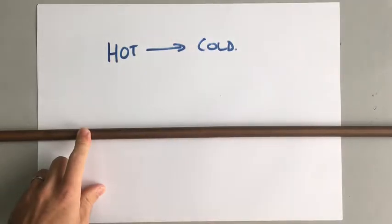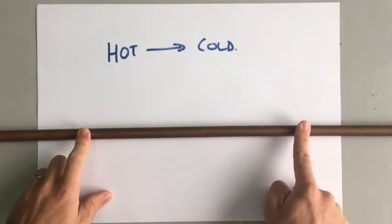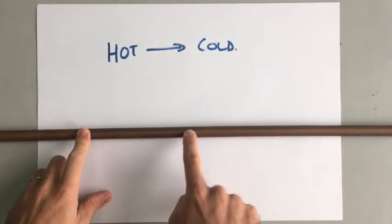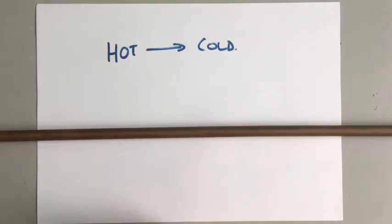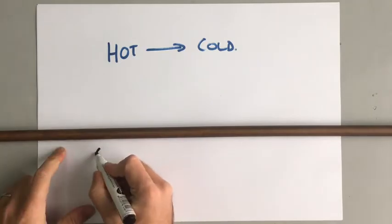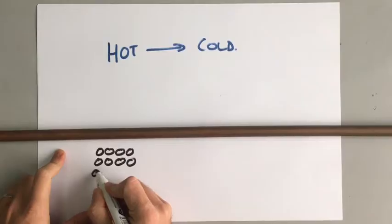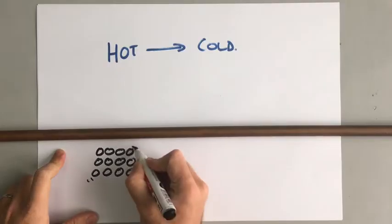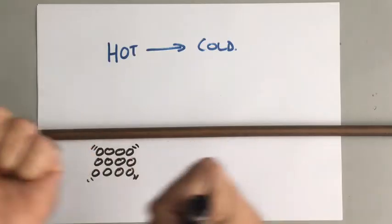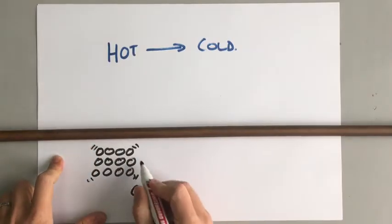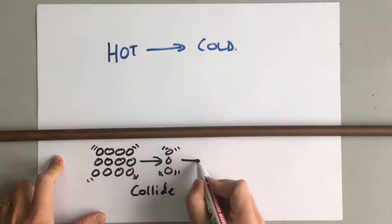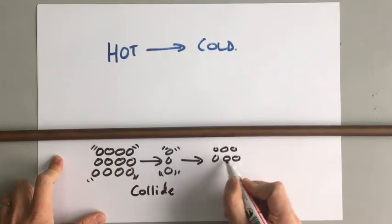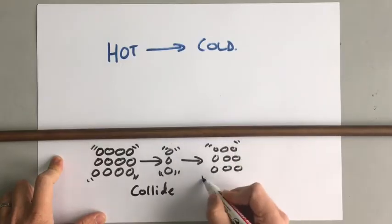Heat energy always goes from hot to cold. If this end is colder than the other, the heat energy needs to pass through the bar. We know that solids have particles that are closely packed together and can't move, so the particles can't move up and down the bar. What does happen is the particles here, when they get hot, they start to vibrate more. As they vibrate more, they collide with the ones next to them and that passes the energy on. These ones start vibrating and then they collide with the next ones, and so on, until heat spreads down the bar.